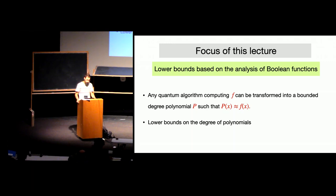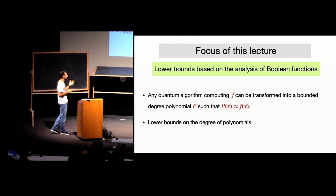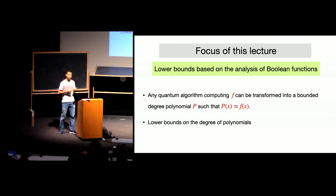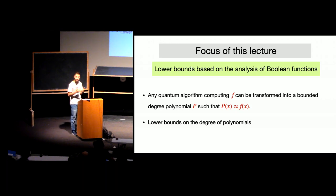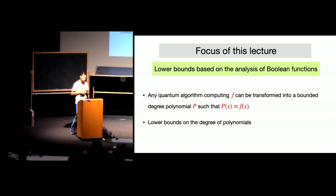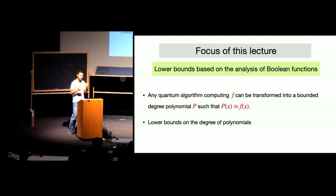The two main messages of this lecture are: first, any quantum algorithm computing some function f in the quantum query model can be transformed into a polynomial of bounded degree that approximates the function we try to compute. Second, we will define ways of lower bounding the degree of polynomials in order to convert these degree results into lower bounds on query complexity.